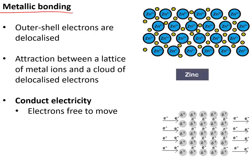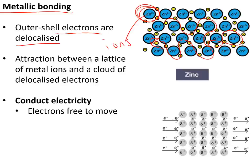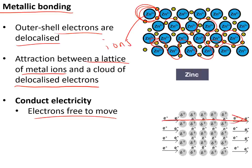Metallic bonding involves delocalised electrons. A delocalised electron is one that, rather than orbiting one atom, is free to move between all of the atoms around it. This leaves the metal atoms as ions because they've lost their outer shell electrons. The metallic bond is the attraction between the lattice of positive metal ions and the cloud of delocalised electrons. Because the electrons are free to move, metals conduct electricity.